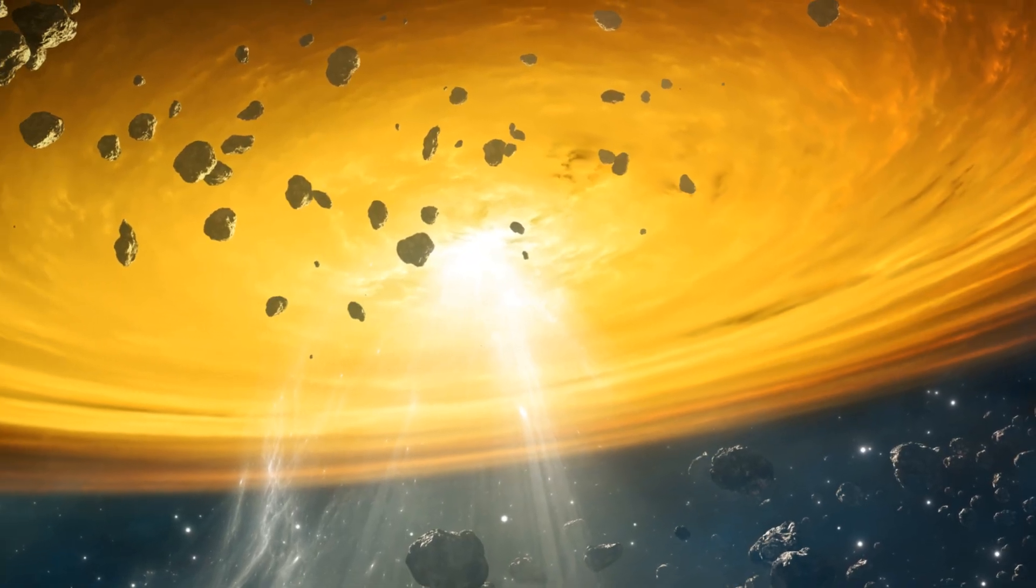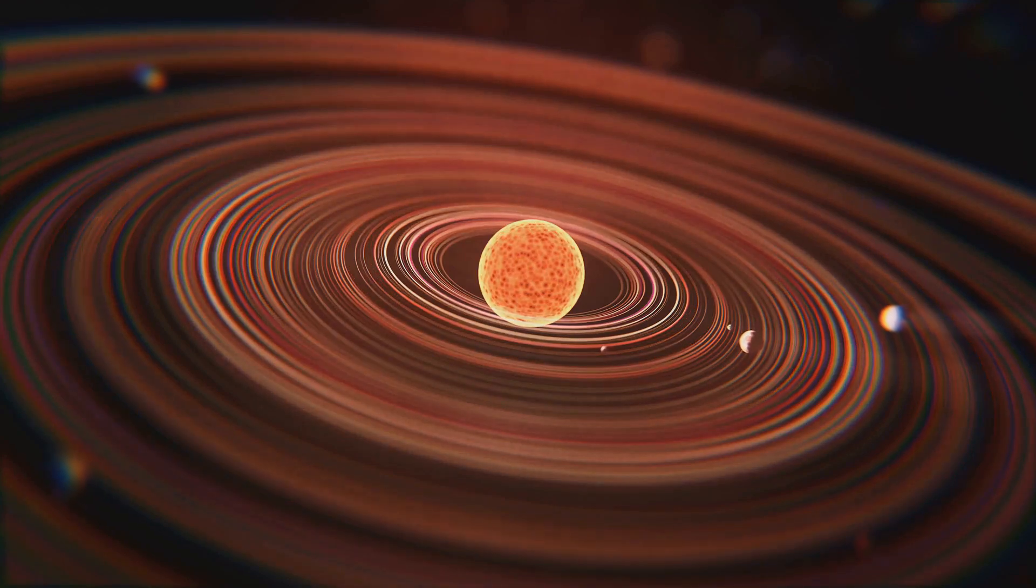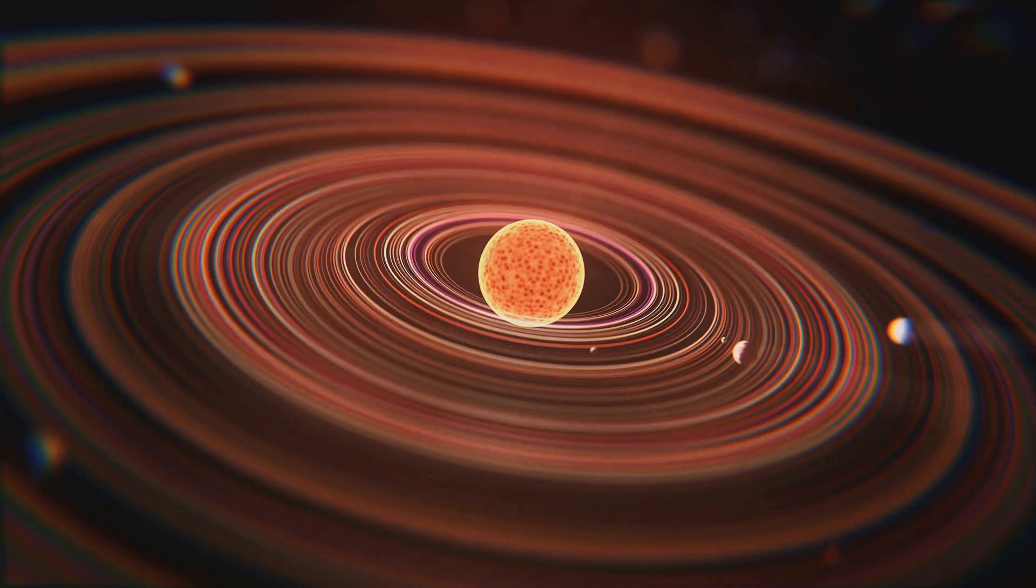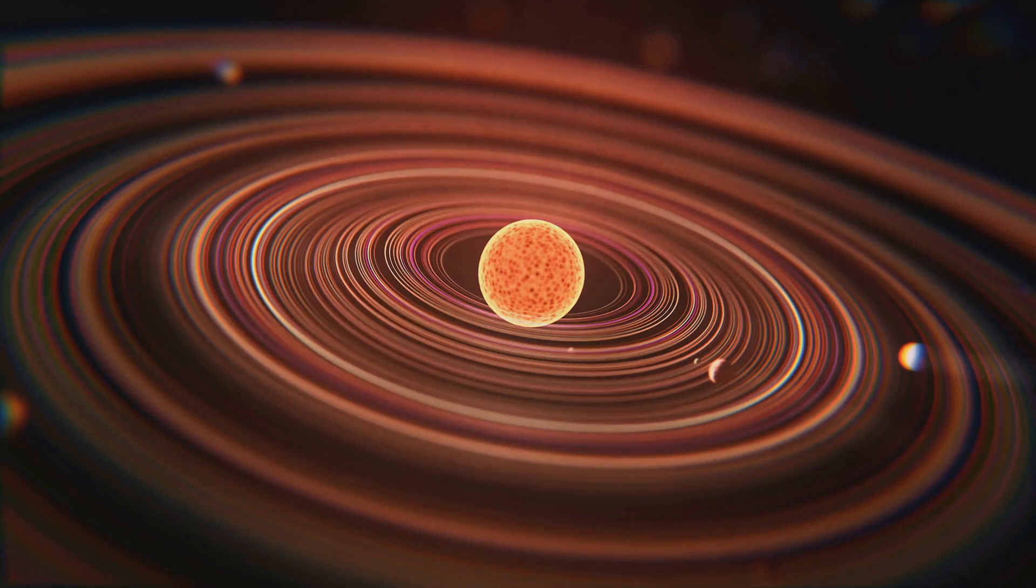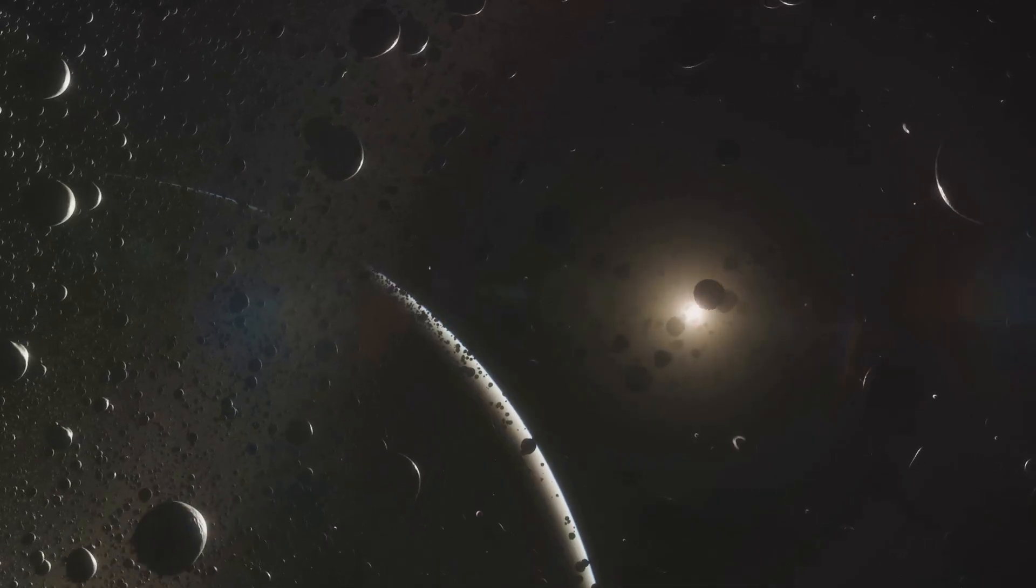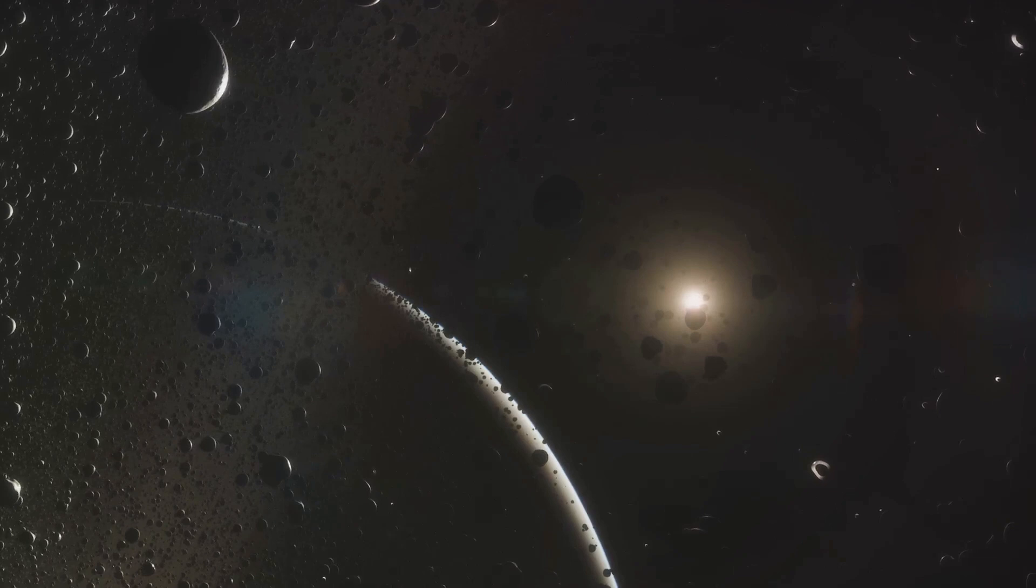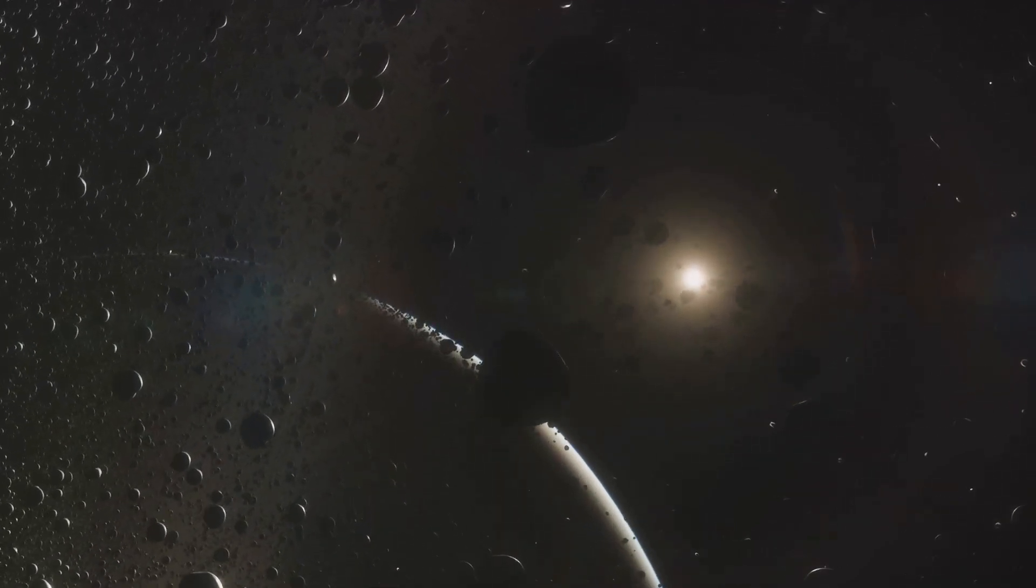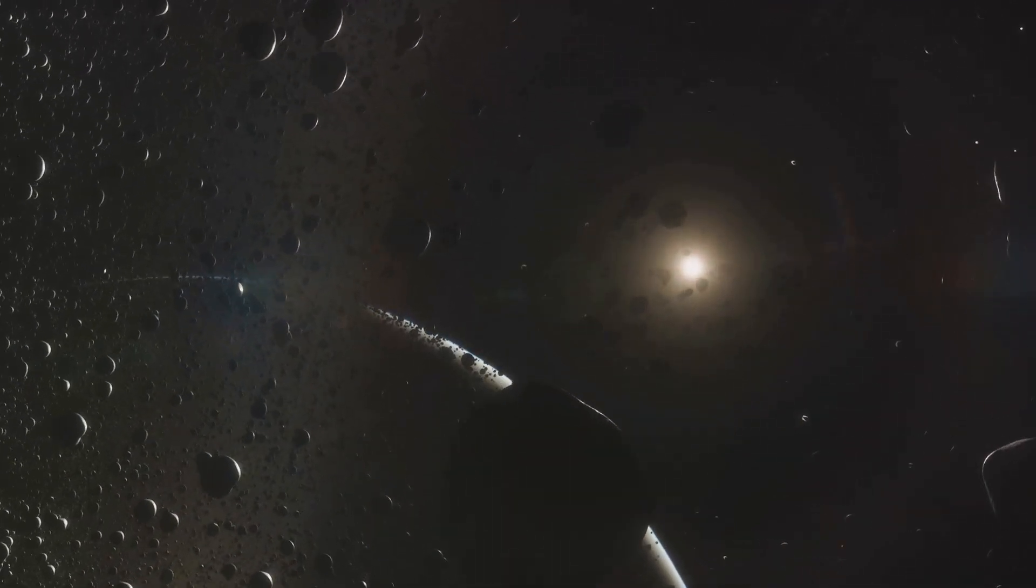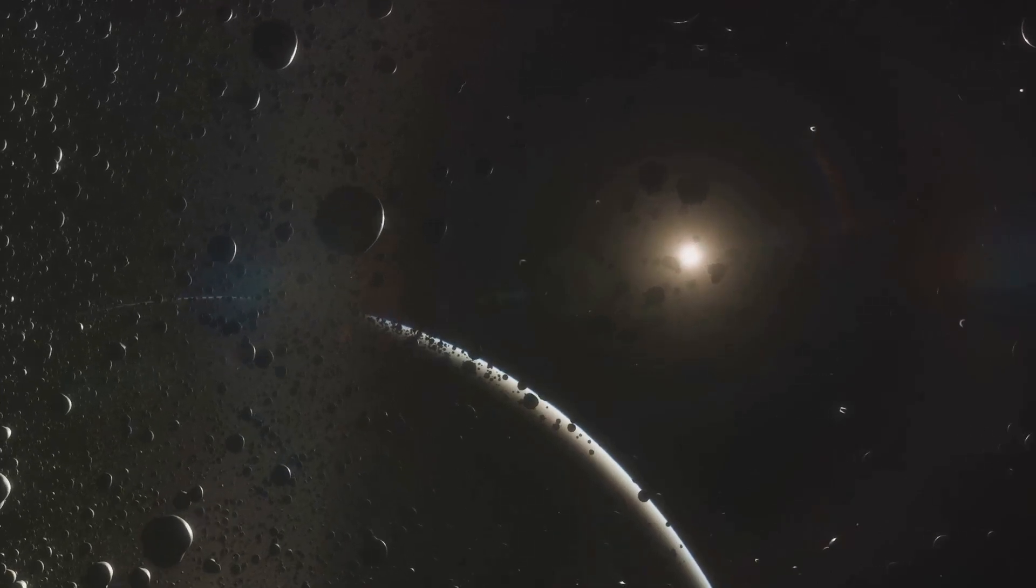This dusty disk is essentially a cosmic nursery. It's composed of gas and dust left over from the creation of the star itself. Over time, these materials start to coalesce, gradually forming larger and larger chunks, until eventually, they form planets. Observing these disks gives us a front-row seat to the planetary formation process, a spectacle that has been unfolding for billions of years in the universe.